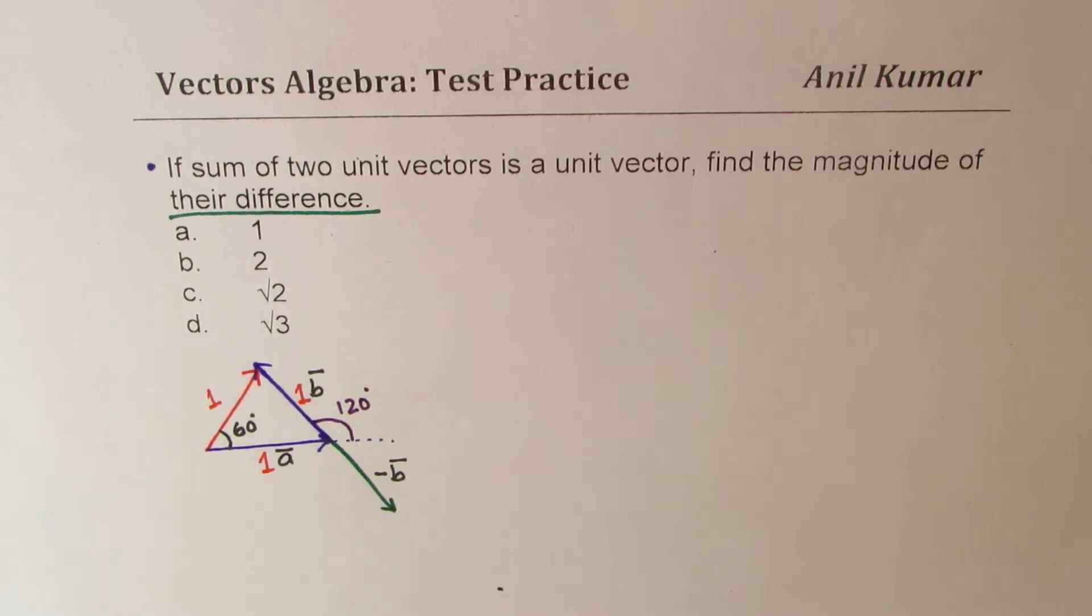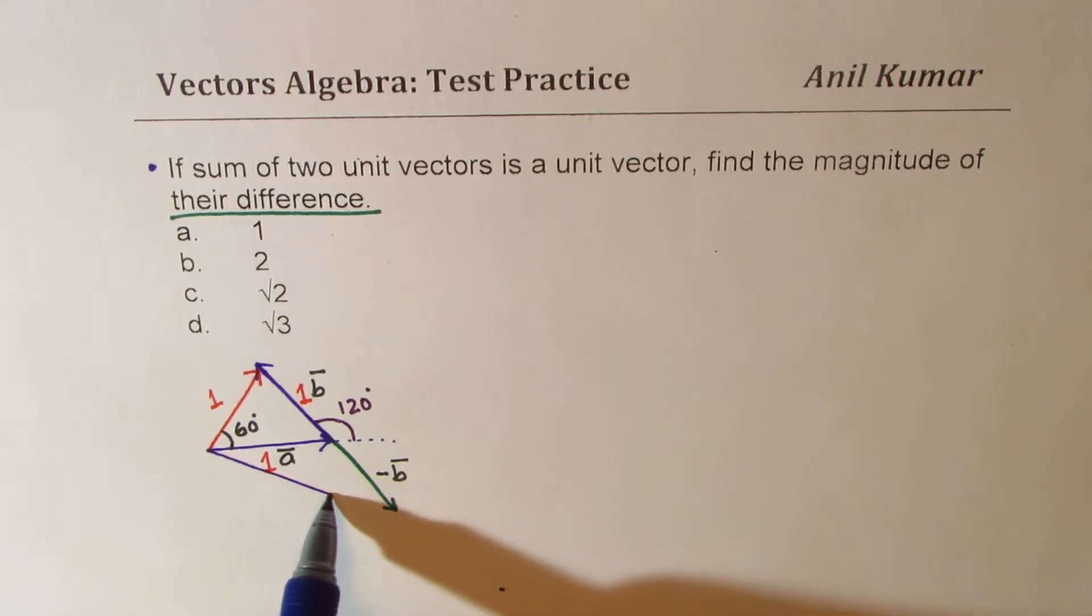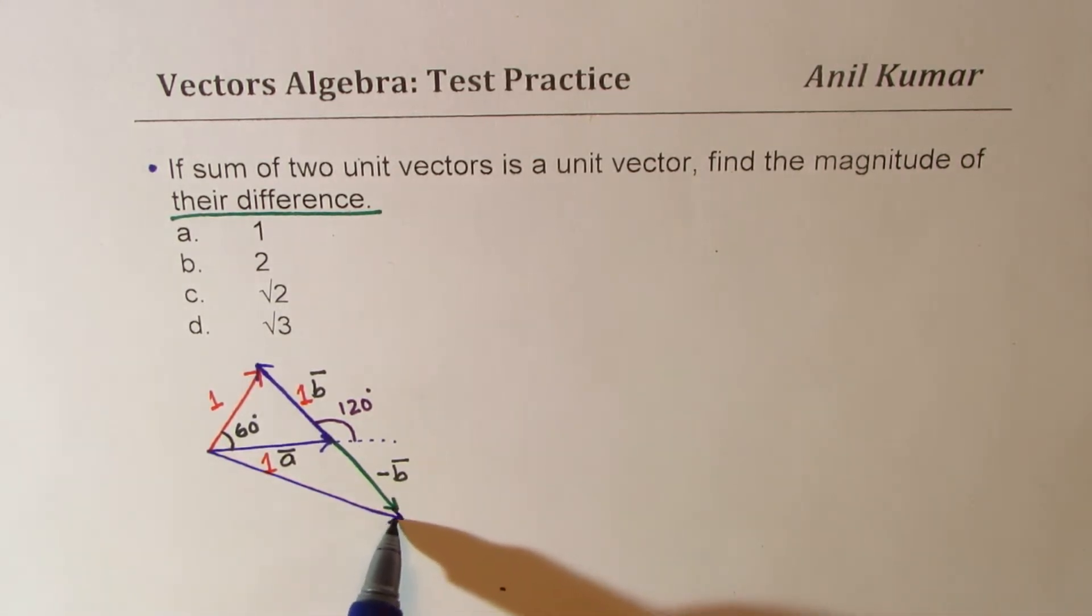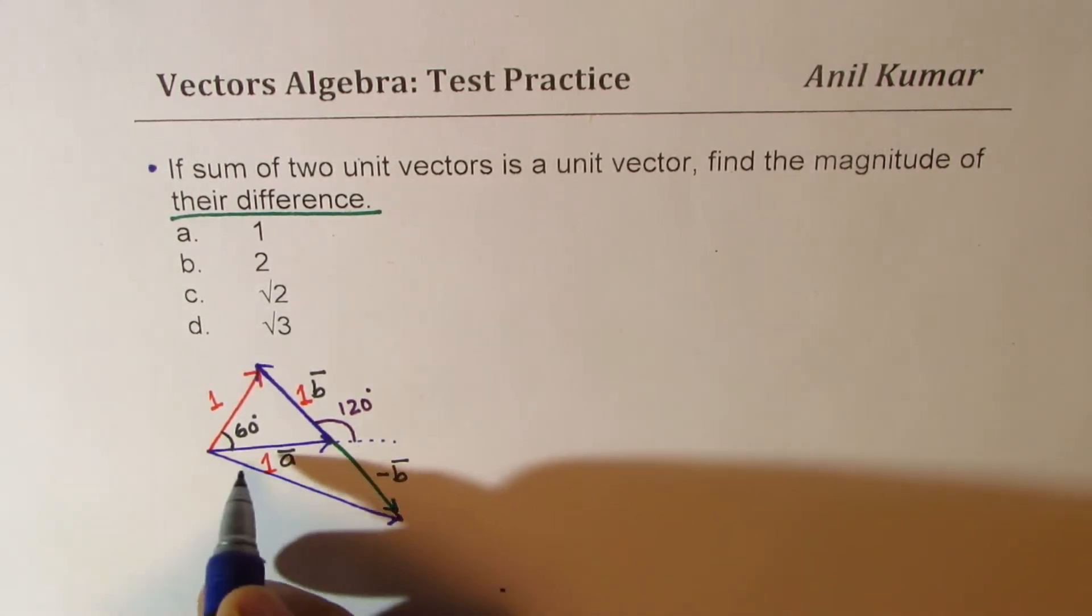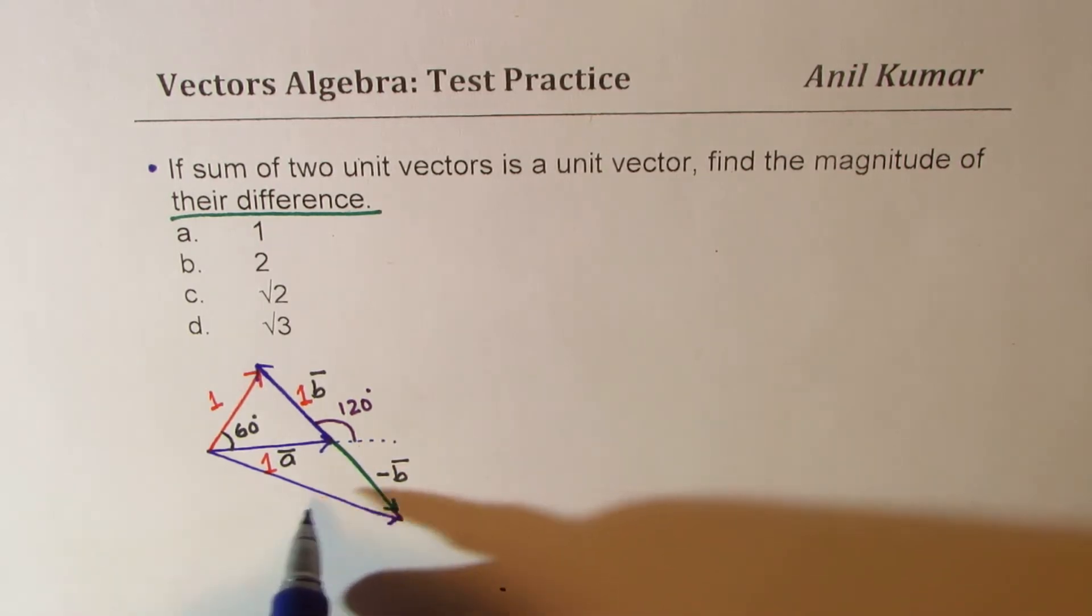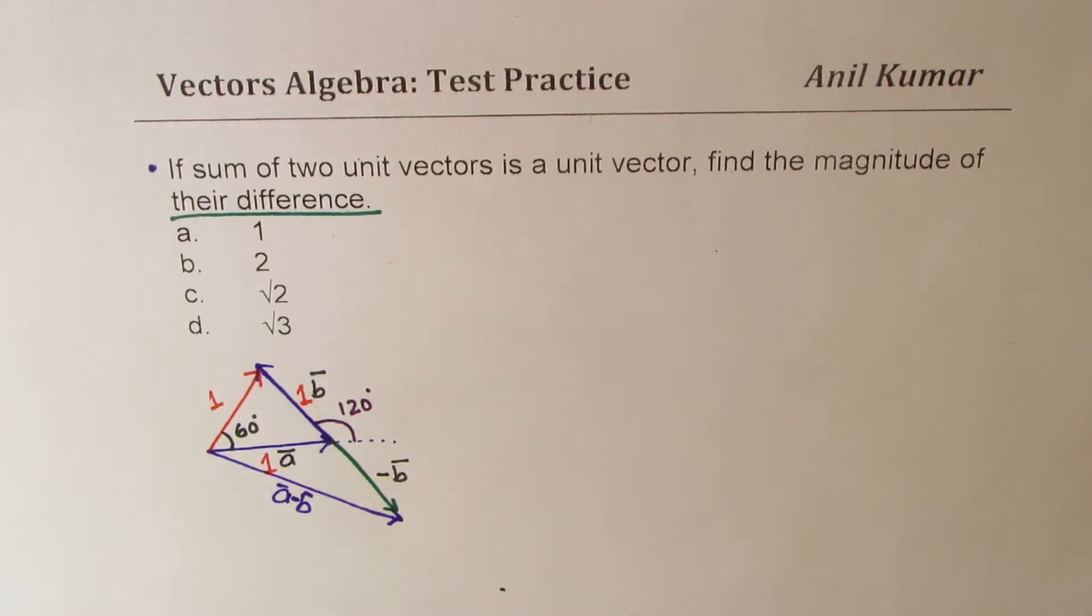And clearly, a minus b will now be the vector joining from here to there. So it will be a vector, which is, so this vector here is a minus b vector. Perfect. So that is how you get a minus b. So we need to really find what is the magnitude of a minus b. I hope that is clear. So let's work on this particular geometry.